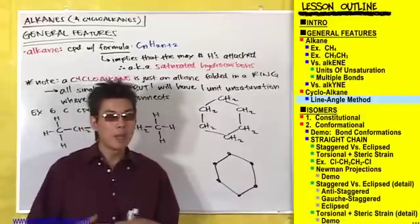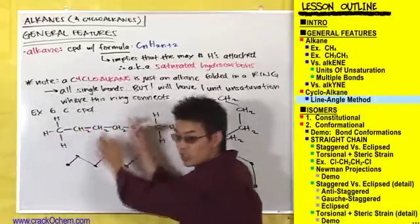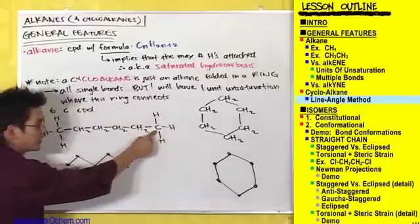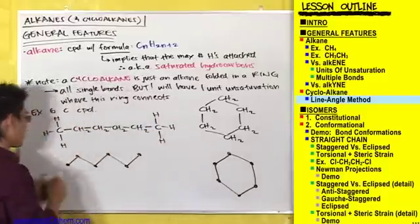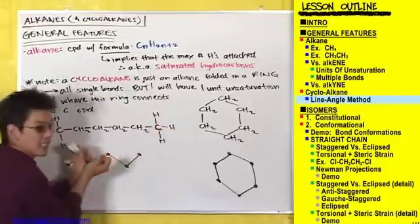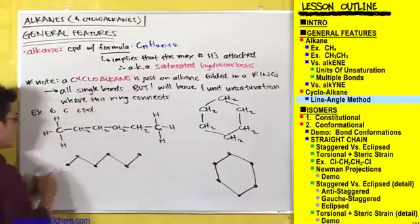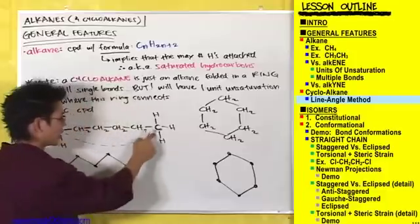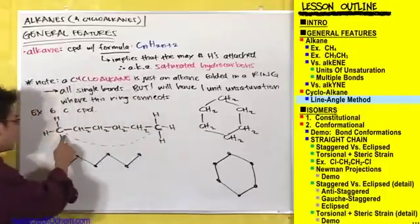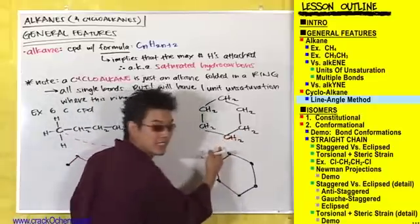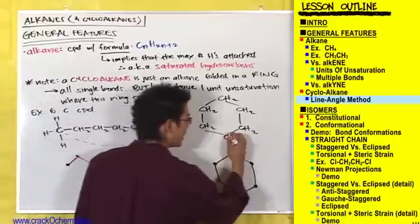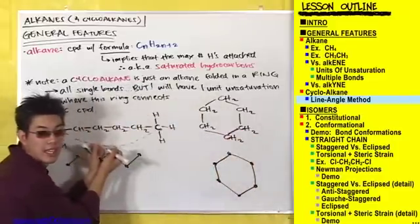To imagine how we formed this ring: all we did was take this straight-chain alkane and fold it up. We took the two carbons on the ends — this carbon and this carbon — and folded the chain so those two end carbons connect together. That bond that forms between them is what closes the ring.